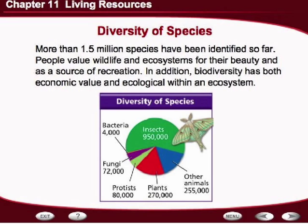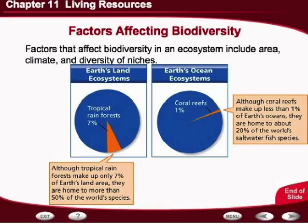Factors that affect biodiversity in an ecosystem include the area, the climate, and the diversity of niches. Tropical rainforests only account for 7% of the actual acreage on the planet, yet they are home to more than 50% of the Earth's species. Coral reefs account for only 1% of the Earth's saltwater areas, yet they are home to about 20% of the world's saltwater fish species. The important fact is that by affecting a fairly small area of the Earth's surface or ocean ecosystems, you can have a drastic effect on a huge number of species of organisms.